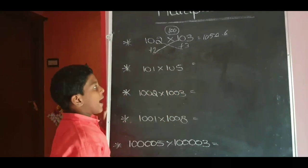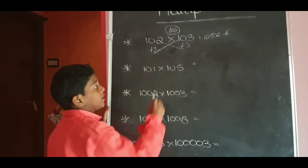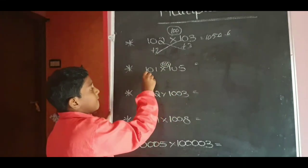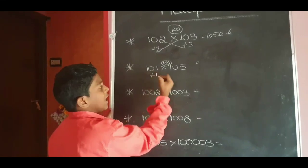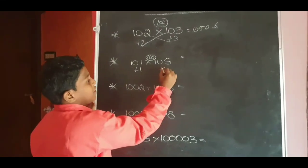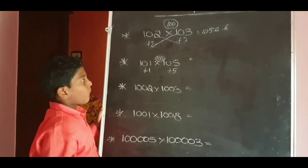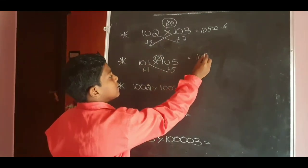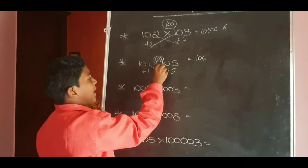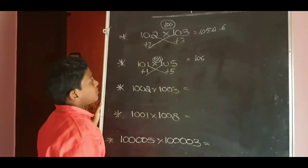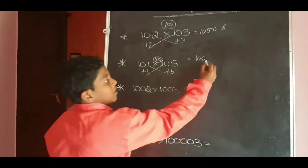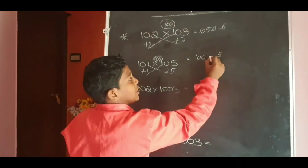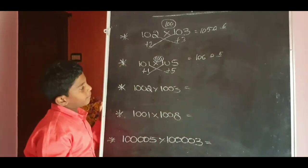Next: 101 into 105. This is nearest to 100. For 100, 101 plus 1; for 100, 105 plus 5. 101 plus 5 equals 106. 105 plus 1 equals 106. For 100, two zeros means still two digits. 1 into 5 equals 05. The answer is 10605.